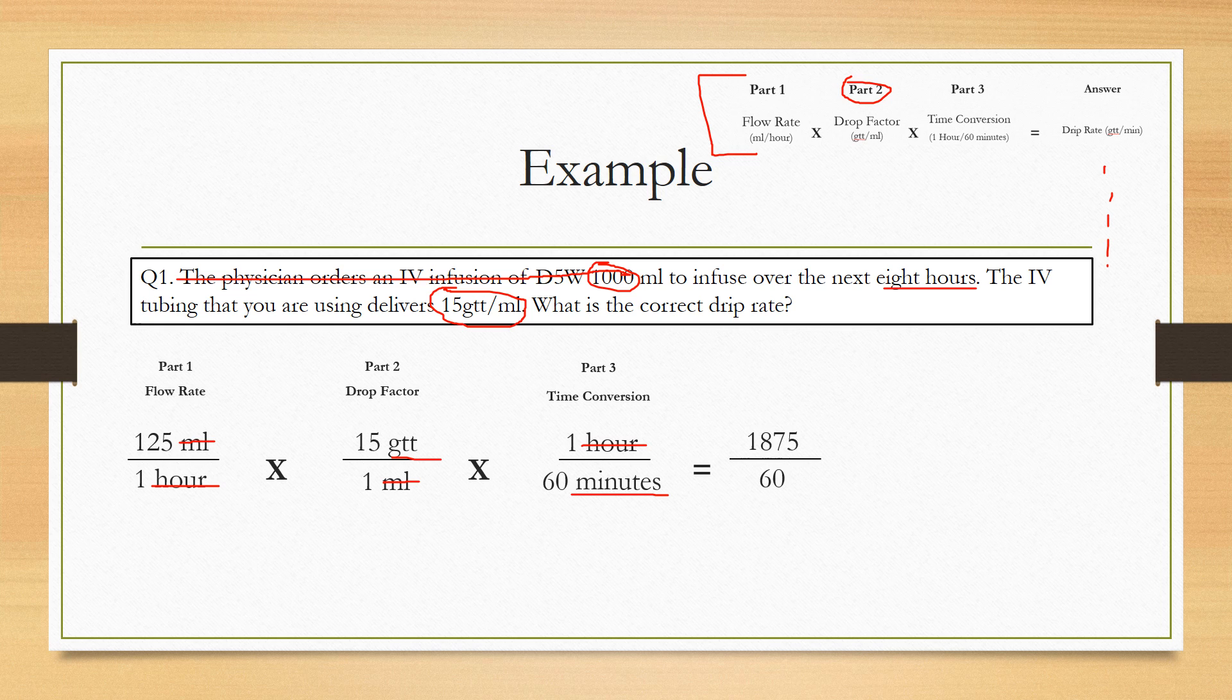125 multiplied by 15 multiplied by 1. And that's going to give you the numerator. And then 1 multiplied by 1 multiplied by 60 is going to give you the denominator. So basically what that's going to give you is 1875 divided by 60.